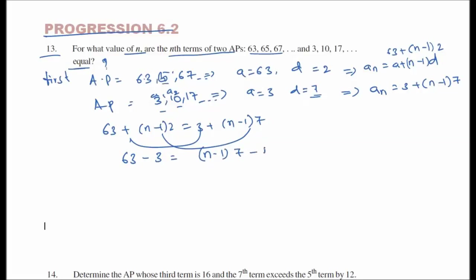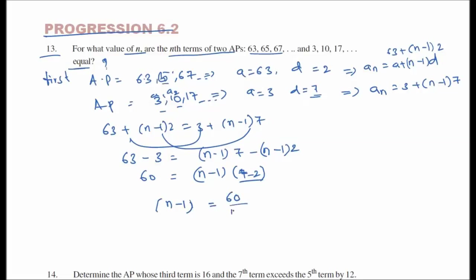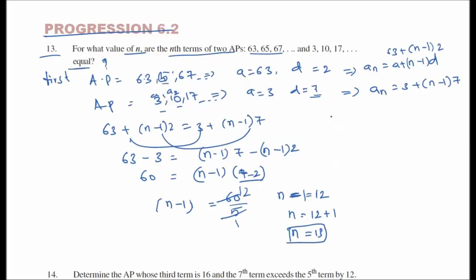This simplifies to 60 equals (n minus 1) times 5, so n minus 1 equals 60 divided by 5, which gives n minus 1 equals 12, therefore n equals 13. The 13th terms of both APs are equal.